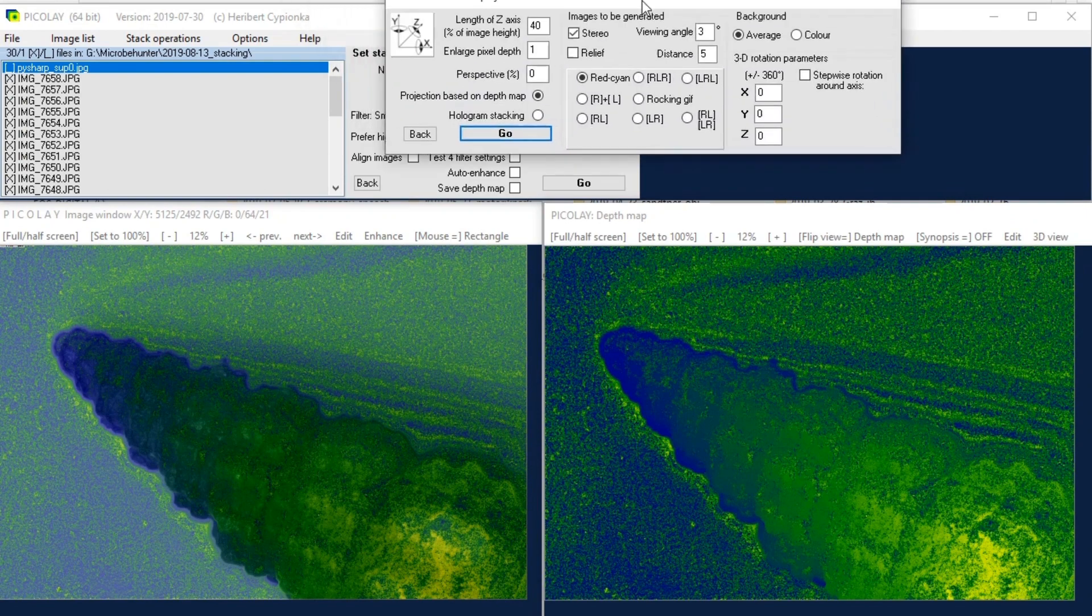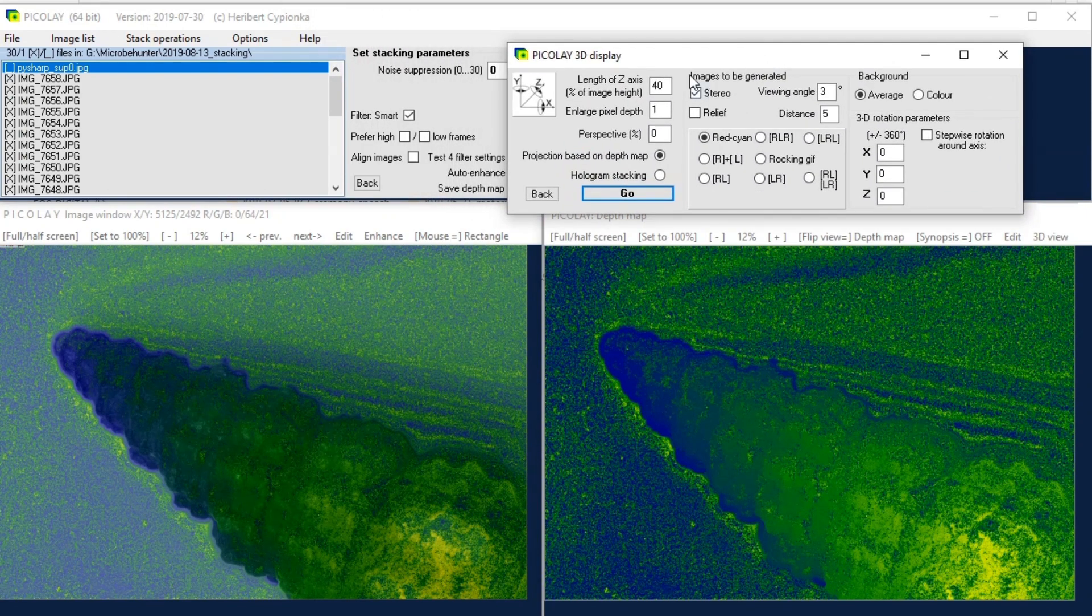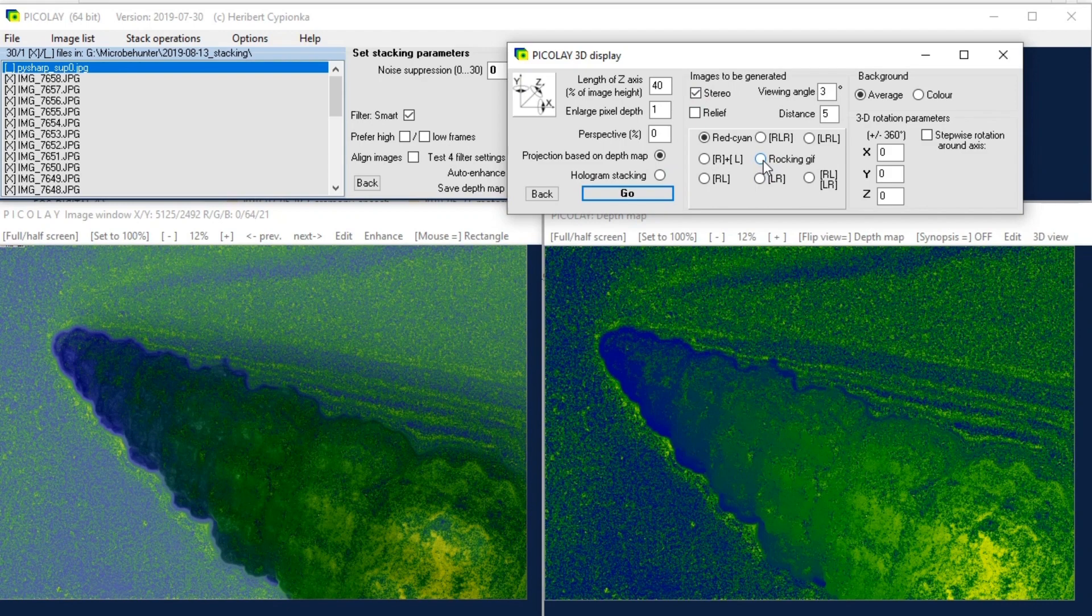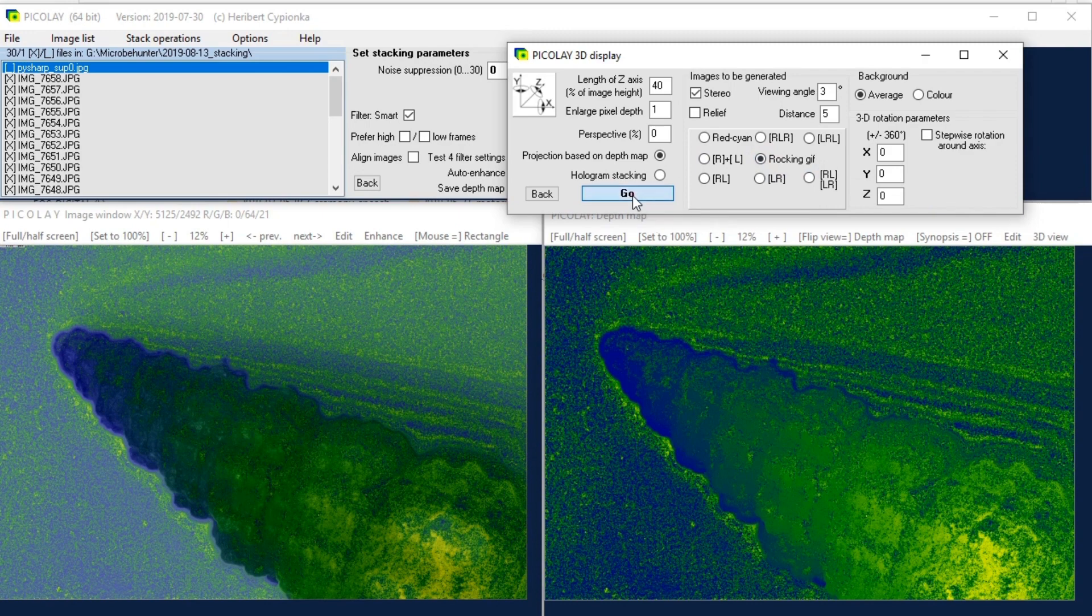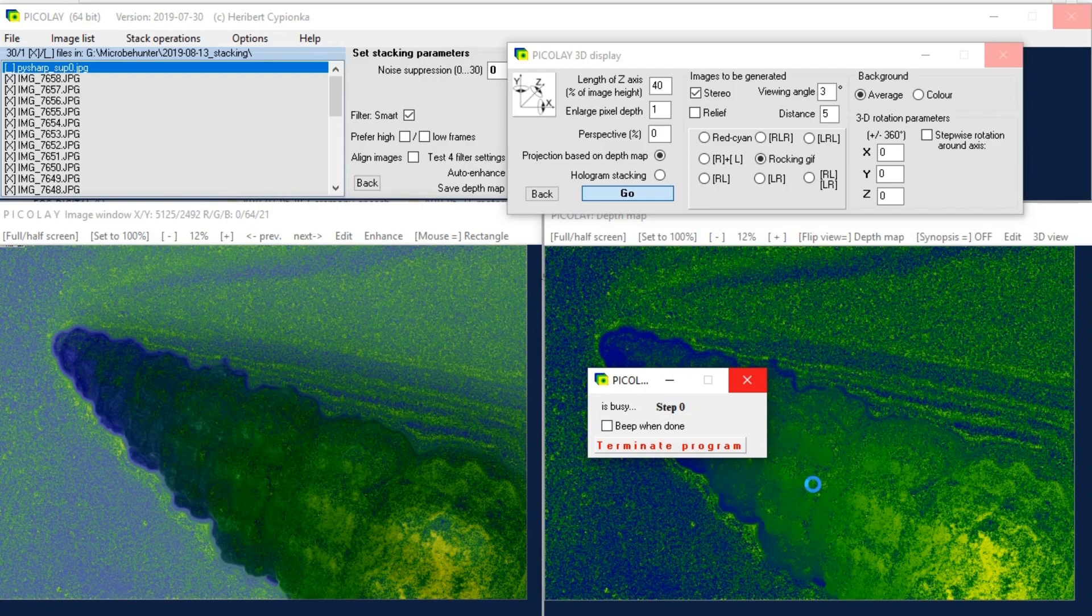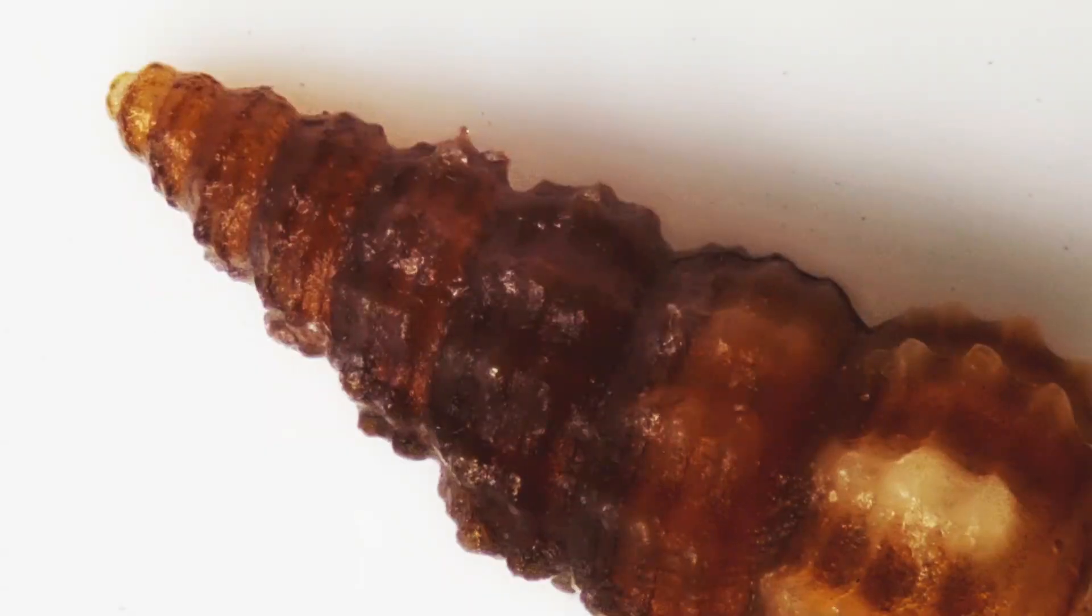I'm just going to show you something else now if you click 3D view you can also make certain three-dimensional adjustments for stereoscopy so rocking GIF that's what I want to just show you and you click go you have to wait again several minutes and it will make a GIF an image that moves back and forth like this giving also a three-dimensional impression.